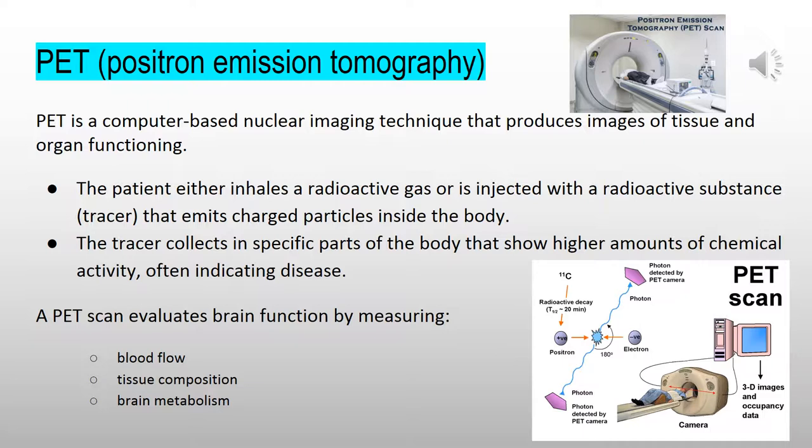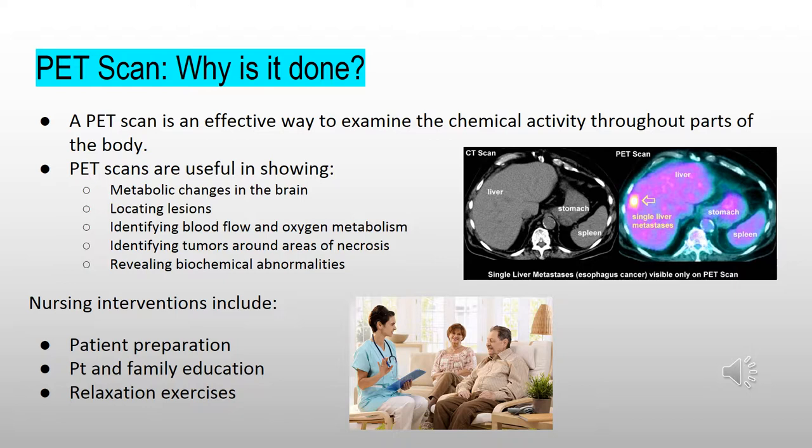A PET scan is an effective way to examine the chemical activity running throughout the body. PET scans are most useful in showing metabolic changes in the brain such as Alzheimer's disease, locating lesions such as brain tumors, identifying blood flow and oxygen metabolism, distinguishing a tumor from necrotic tissue, and revealing biochemical abnormalities often associated with mental illness.